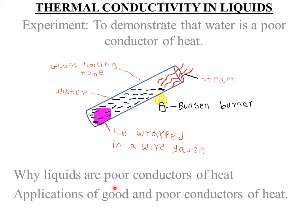We can also look at various applications of good and poor conductors of heat. In life you need to know the applications — what is the importance of heat conduction and how it is applicable in real life. The first application is in cooking utensils. Cooking utensils, soldering irons, and boilers are made of metals which conduct heat rapidly, since metals are good conductors of heat.